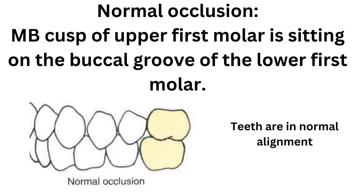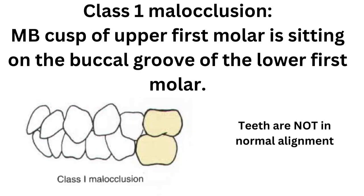It is called normal occlusion because the teeth are in normal alignment, not like the class 1 malocclusion. The class 1 malocclusion is similar to normal occlusion, but the difference is that the teeth are not in normal alignment. There is crowding, as you can see.